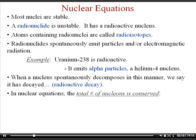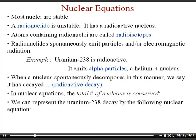In a nuclear equation, the total number of nucleons is conserved. The top number represents nucleons and the bottom number represents the charge or number of protons. For uranium-238 decay, the top numbers on both sides add up to 238 and the bottom numbers also balance. When uranium-238 spits out a helium nucleus, it turns into thorium with a mass number of 234.